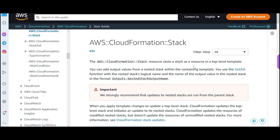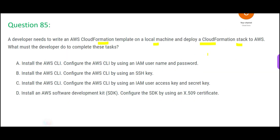You have this on your local machine and you want to deploy the stack. What is a stack? It's a group of resources — you can have one EC2 instance, one RDS database, one Redshift database, and so on. That can be one stack. You created the stack and now you want to deploy it to AWS. What should you do?